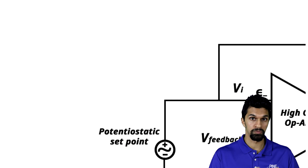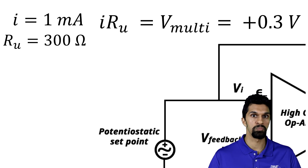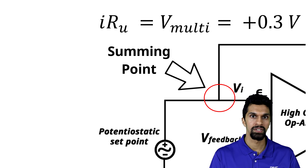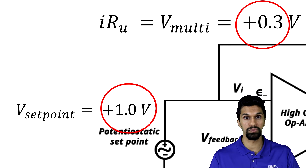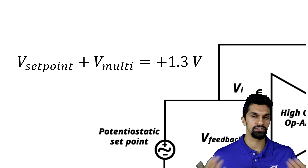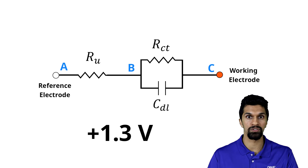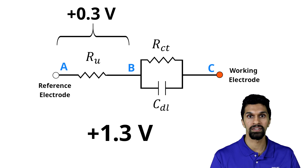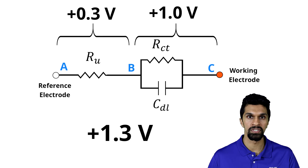So in our example, we're passing one milliamp of current, we have 300 ohms of solution resistance — that's 0.3 volts — which then gets added to our summing point where we have plus one volt from the potentiostat set point. So one volt plus 0.3 is plus 1.3 volts, and that is what our potentiostat is actually applying in our electrochemical system. Applying plus 1.3 volts across our Randles circuit, 0.3 volts is consumed by the solution resistance, but then we have plus one volt which is now being applied across the working electrode interface.